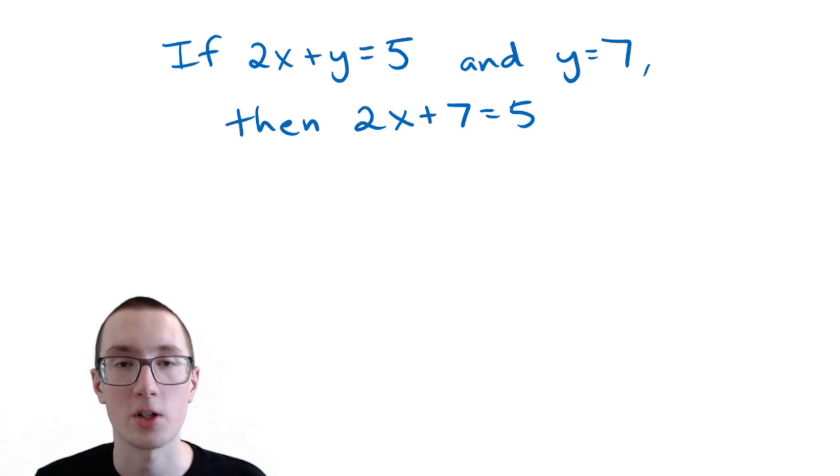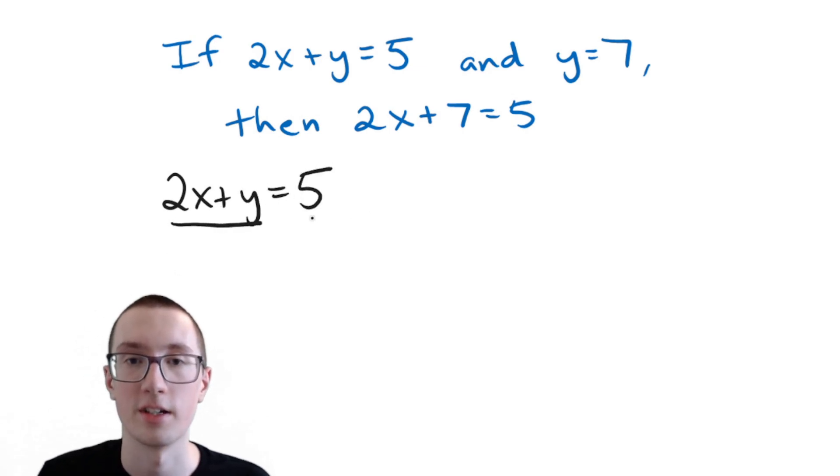And if you look at it closely, you'll notice that the transitive property doesn't actually work here. We have two X plus Y equals five. So two X plus Y is our first thing, and five is our second thing. But then our second equation, Y equals seven. Well, yeah, seven is our third thing, but Y, that's a part of our first thing.